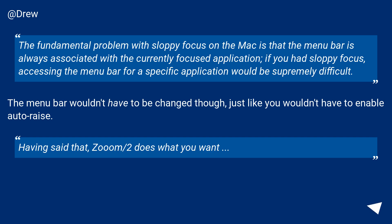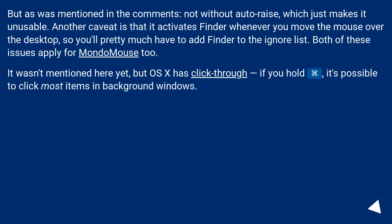The menu bar wouldn't have to be changed, just like you wouldn't have to enable auto-raise. However, Zoom/2 comes with auto-raise, which makes it unusable. Another caveat is that it activates Finder whenever you move the mouse over the desktop, so you'll pretty much have to add Finder to the ignore list. Both of these issues apply to Mondo Mouse too.